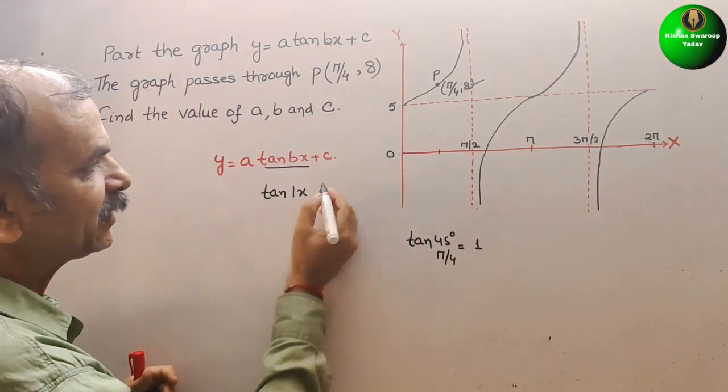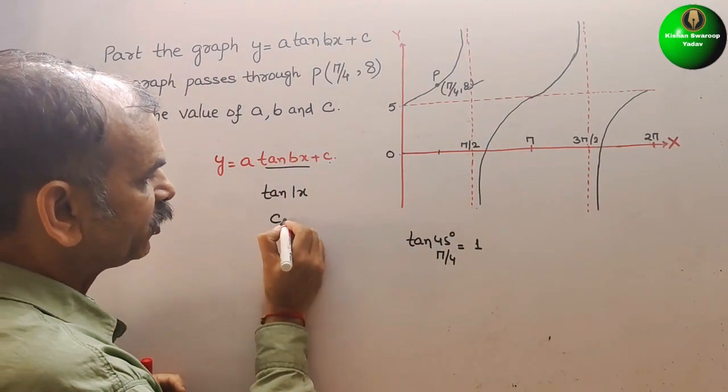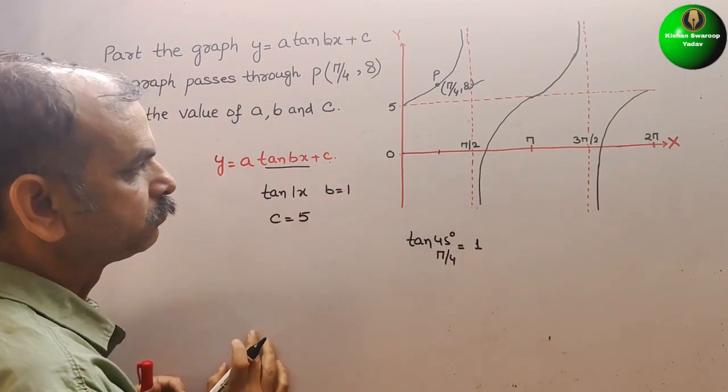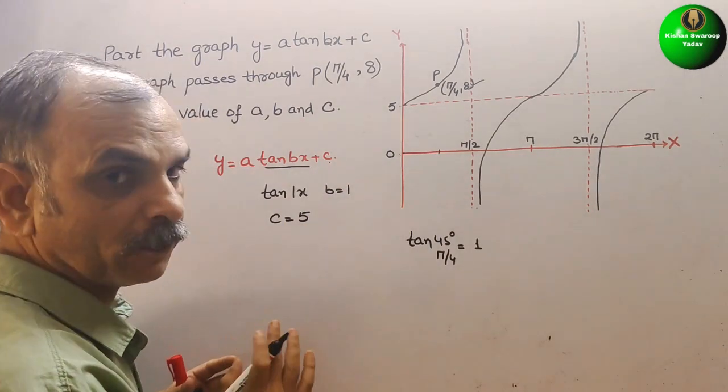Therefore, we can say c is 5. So we can say c is equal to 5. By this we will get b is equal to 1.